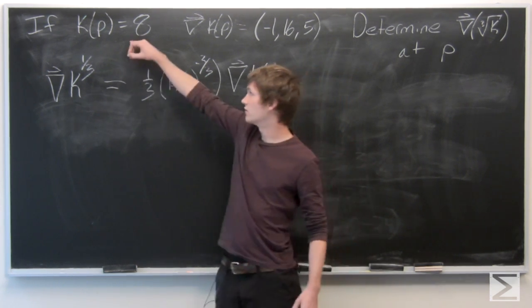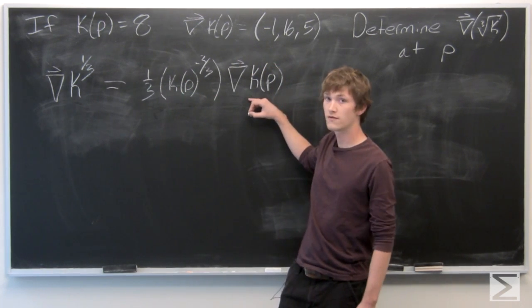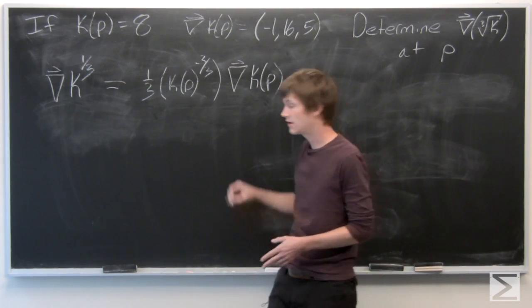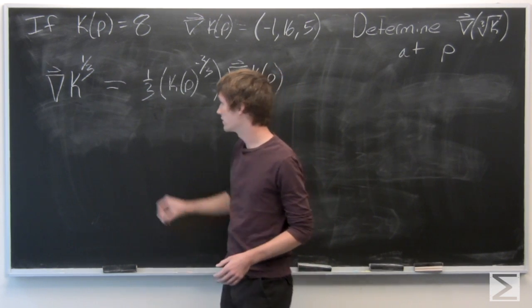So we know that k of p equals 8, and we know that the gradient vector of k at p is equal to negative 1, 16, and 5. So we can plug those values in.